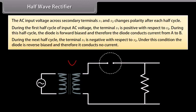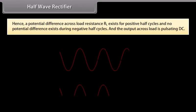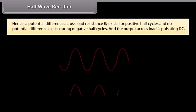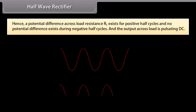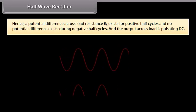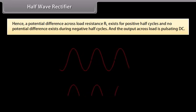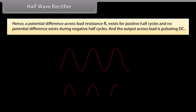During the next half cycle, terminal S1 is negative with respect to S2. Under this condition, the diode is reverse biased and therefore conducts no current. Hence, a potential difference across load resistance RL exists for positive half cycles and no potential difference exists during negative half cycles. The output across the load is pulsating DC.